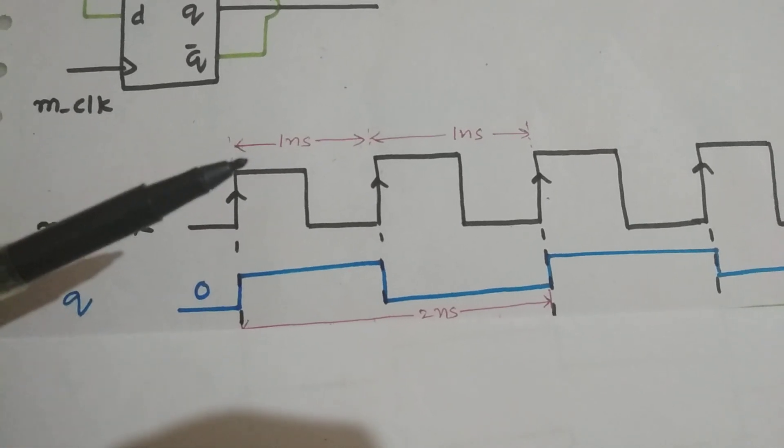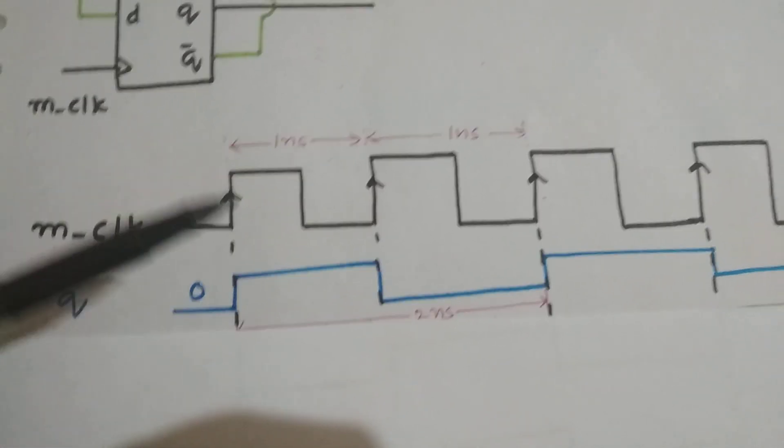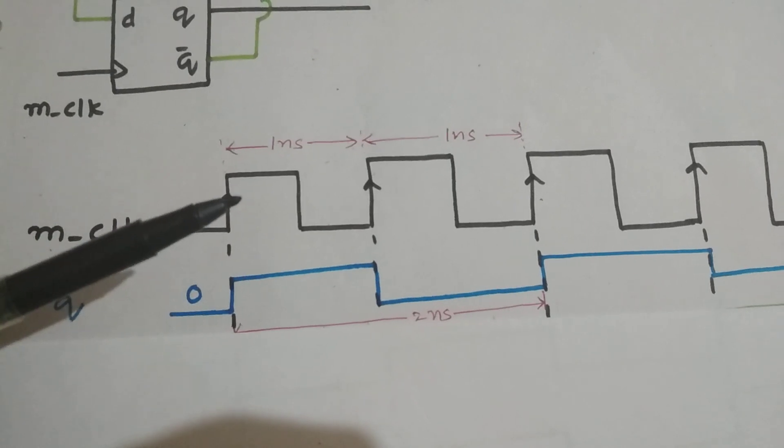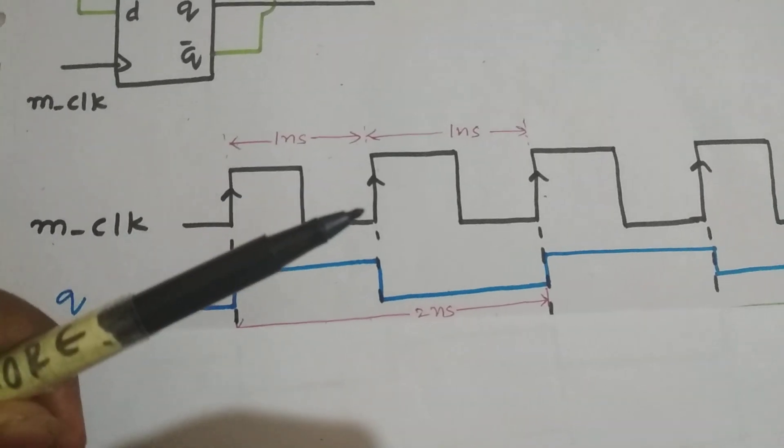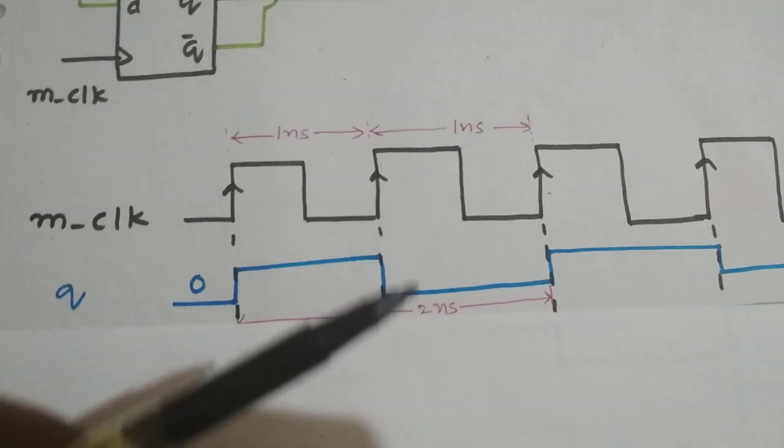As you can see, we have frequency divided by 2, which means we need to cover two periods of this clock in our generated clock.